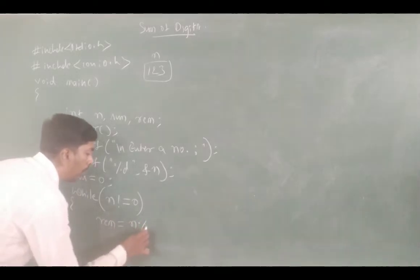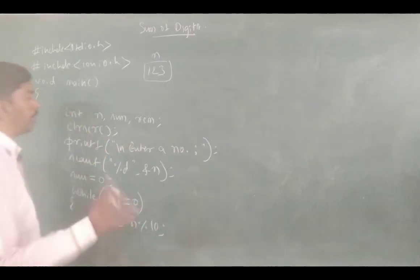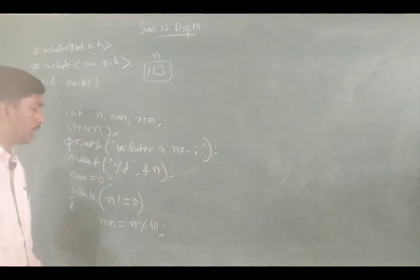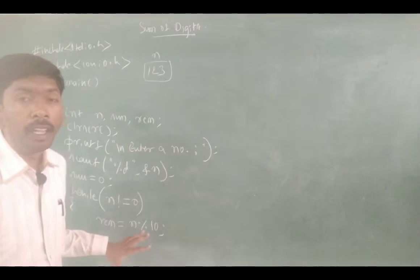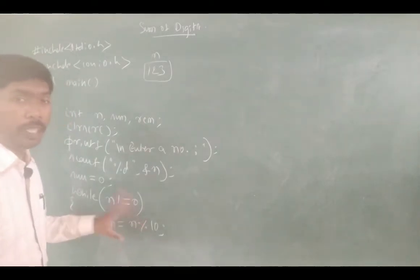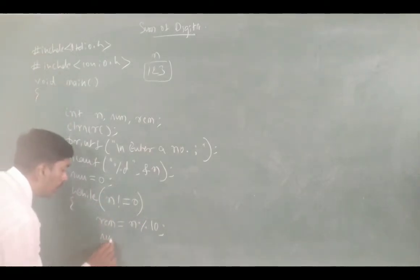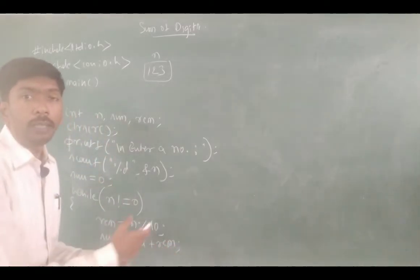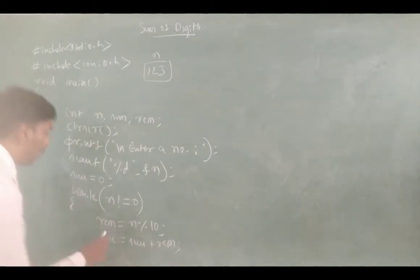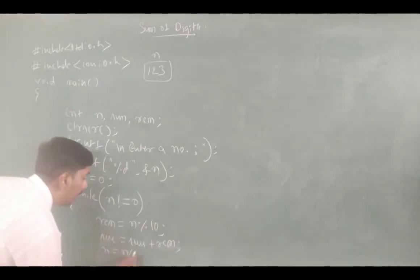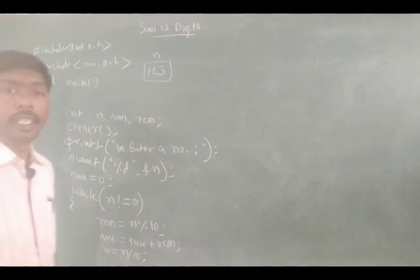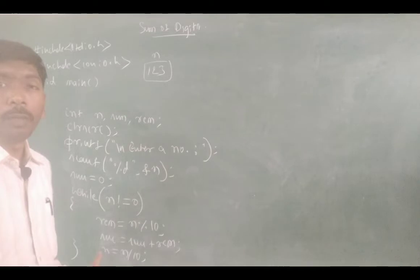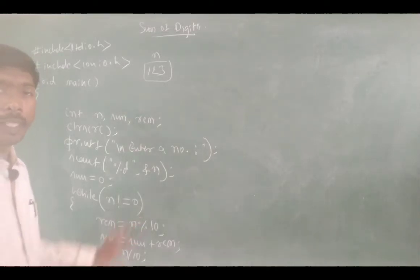Inside the loop, rem is equal to n mod 10. This gets the remainder. The remainder is stored in the rem variable. Then sum is equal to sum plus rem — we add the remainder to sum each time. Next, n is equal to n divided by 10.